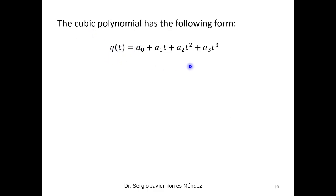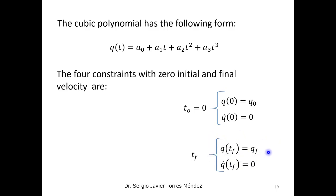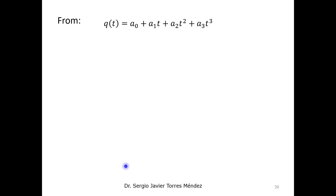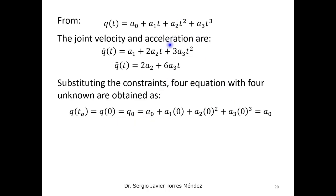The general equation for the cubic polynomial has four coefficients as a function of time. Using the initial constraints — at time zero the joint is at the initial position and velocity is zero, and at the final time the joint is at the final position and velocity is also zero — these four constraints can be established as equations. We substitute these constraints into the position, velocity, and acceleration equations derived from the cubic polynomial.